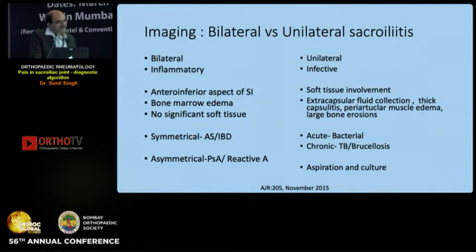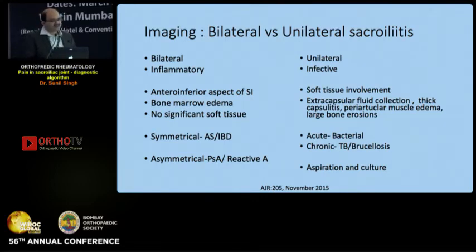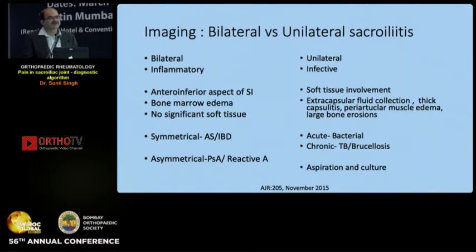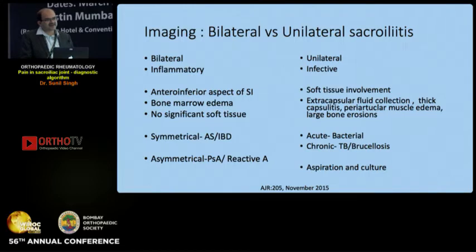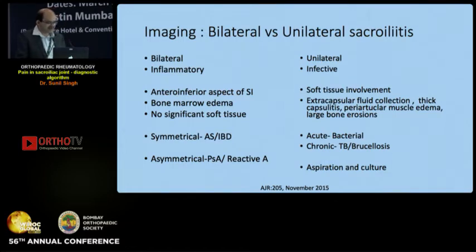On imaging, whether disease is unilateral or bilateral helps considerably. Unilateral disease is often infective, particularly when associated with soft tissue involvement, fluid collections, periarticular muscle edema, or large bone erosions. In the acute setting this could be bacterial, or in a chronic setting it could be tuberculosis or brucella, and one can proceed with aspiration and culture.